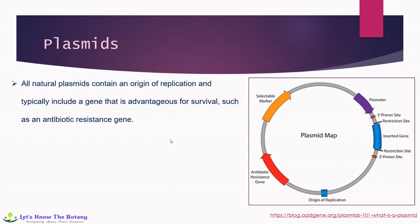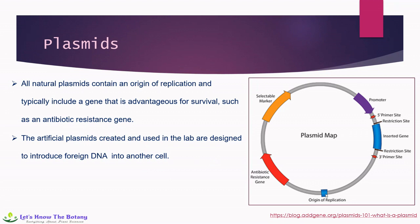This is the plasmid map. All natural plasmids contain an origin of replication and typically include a gene that is advantageous for survival, such as an antibiotic resistance gene. In the figure, you may find the origin of replication site. The artificial plasmids created and used in the lab are digested to introduce foreign DNA into another cell. These two restriction sites — at the 3-prime and 5-prime ends — flank the gene of interest or foreign DNA. This plasmid may also have a promoter site, a selectable marker site, and an antibiotic resistance gene site.